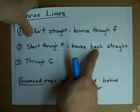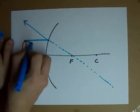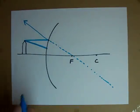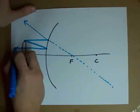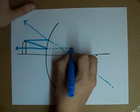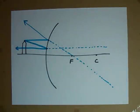Start through F and bounce back straight. So this light ray is headed straight towards F. Aw man, I can't get through. That's a mirror. So I'm just going to bounce off straight. The reflected ray, or bounced ray as I've called it before, extends back this way.